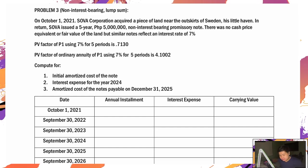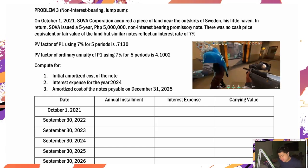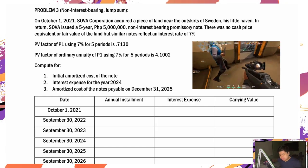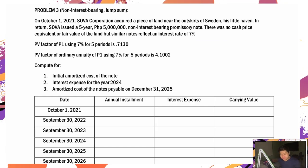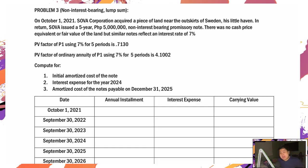Ano nangyari? Bumili daw siya ng lupa, pinambayad ng non-interest bearing promissory note. Pag non-interest bearing, yung interest dyan nakasaksak na doon sa face value — meaning nakapasok na, nakasaksak, magkasama na.